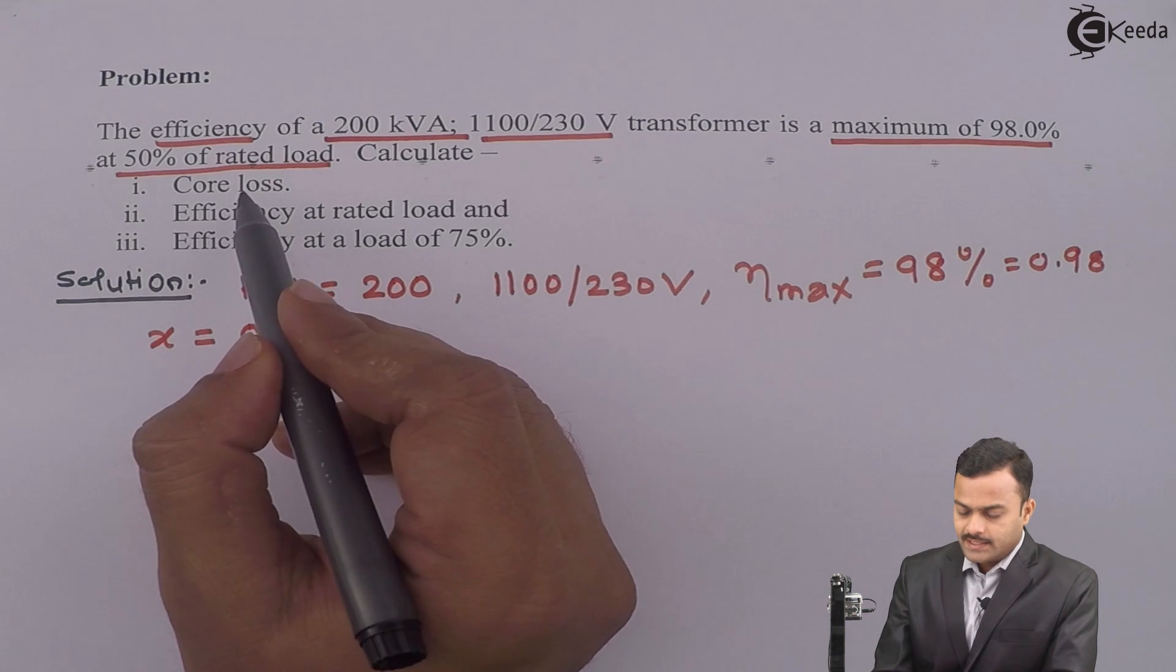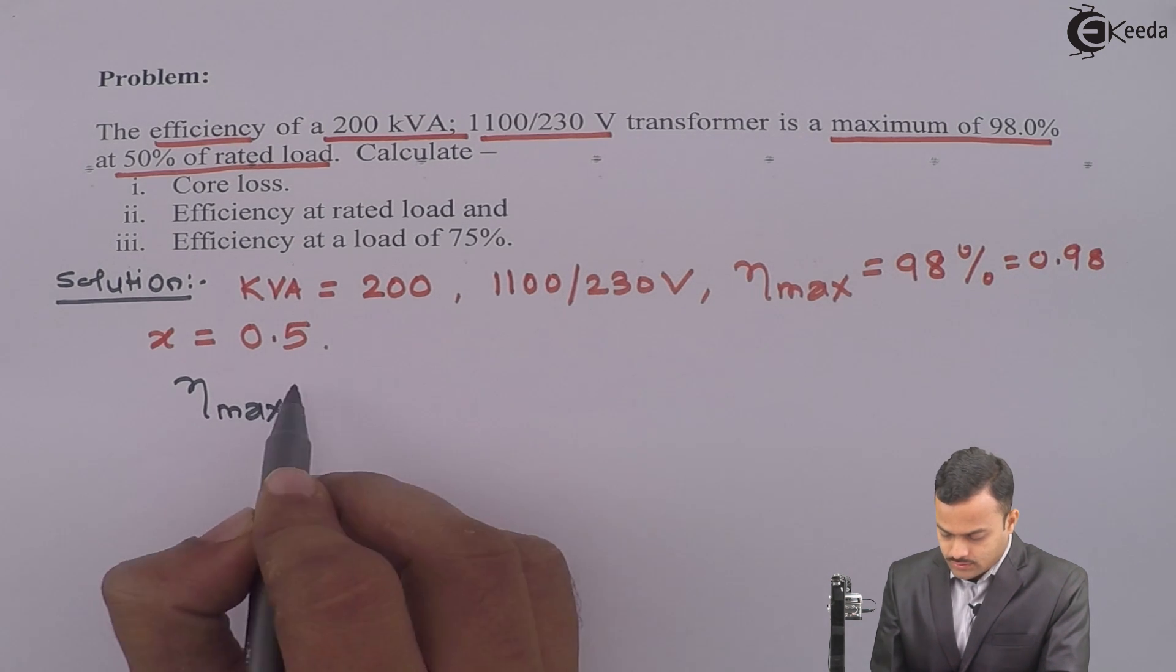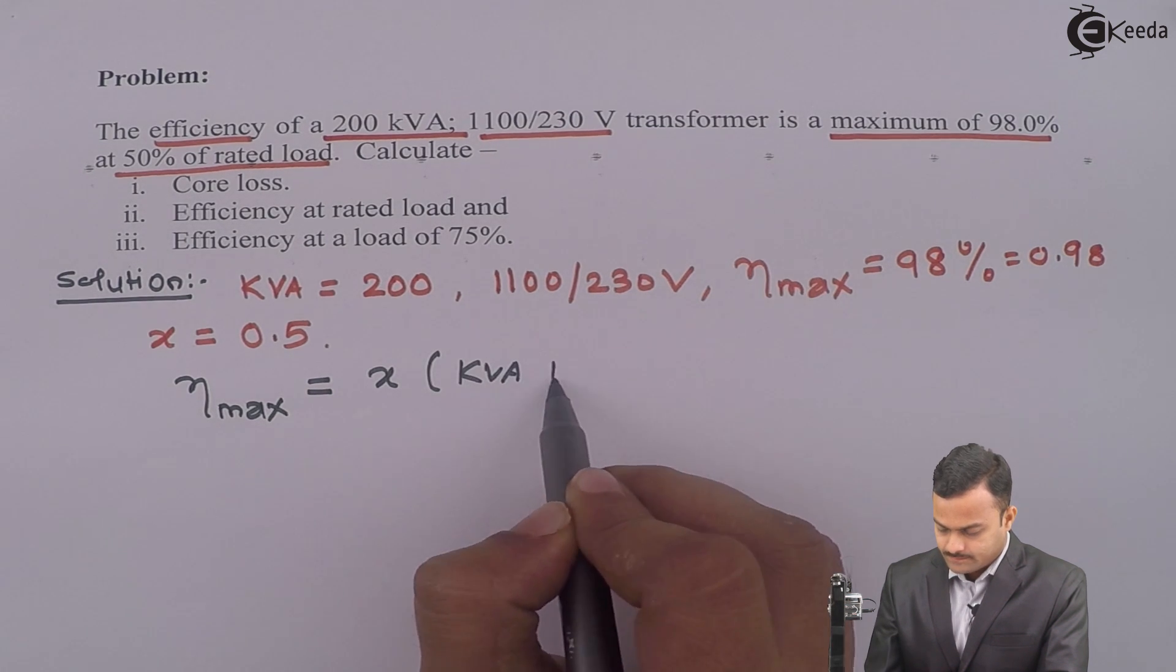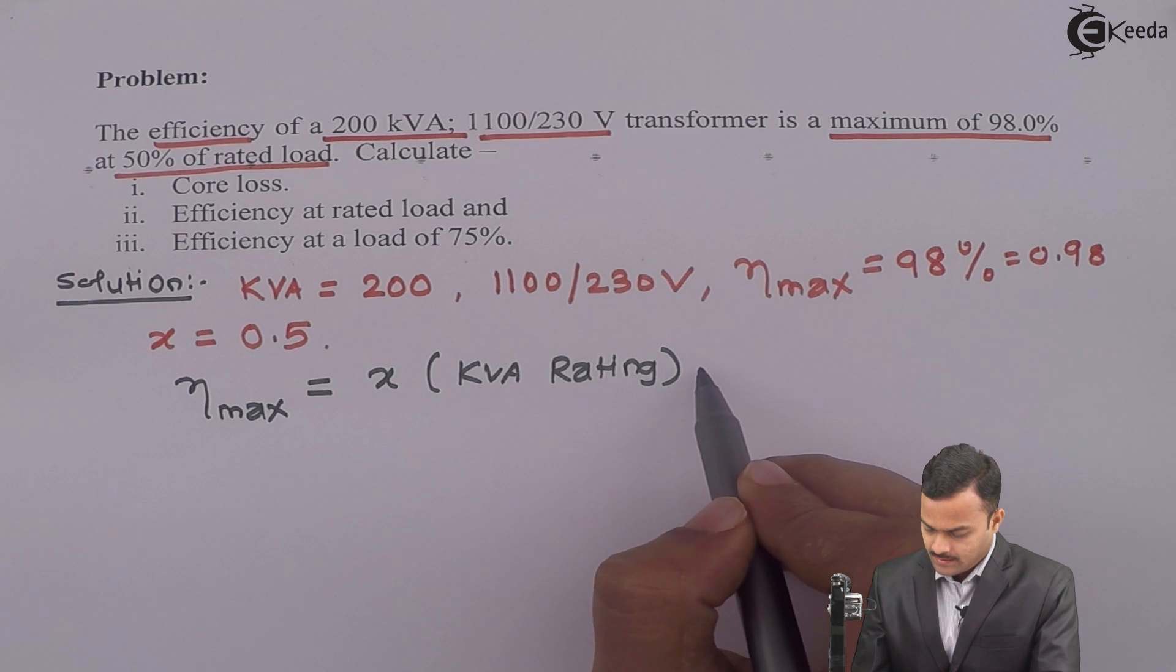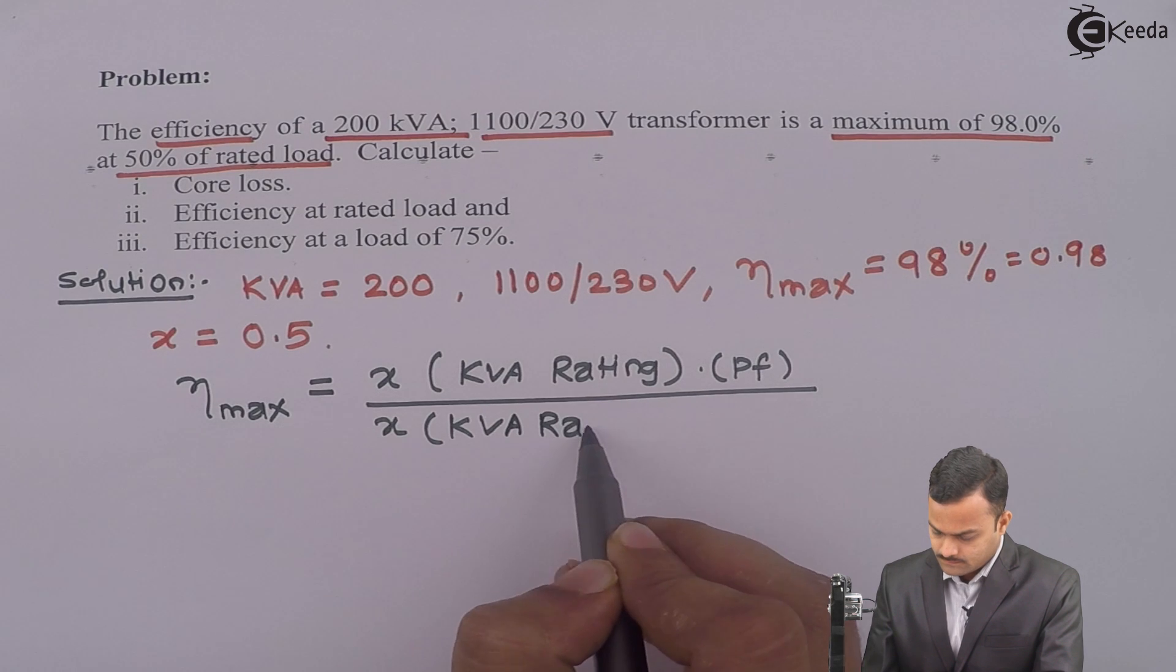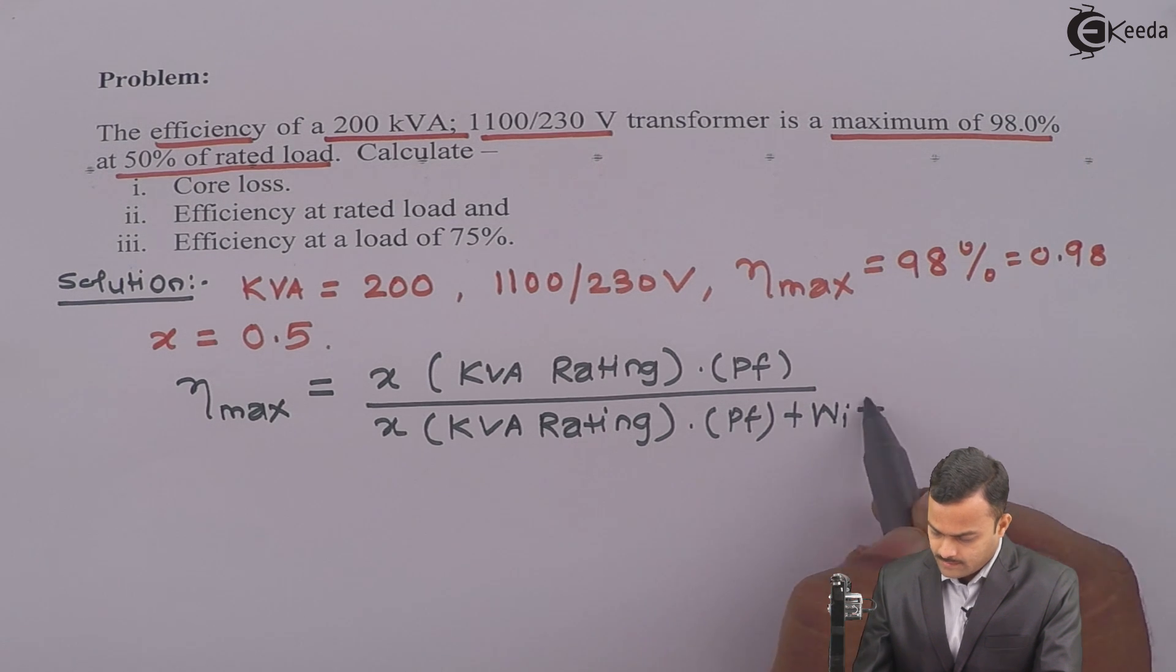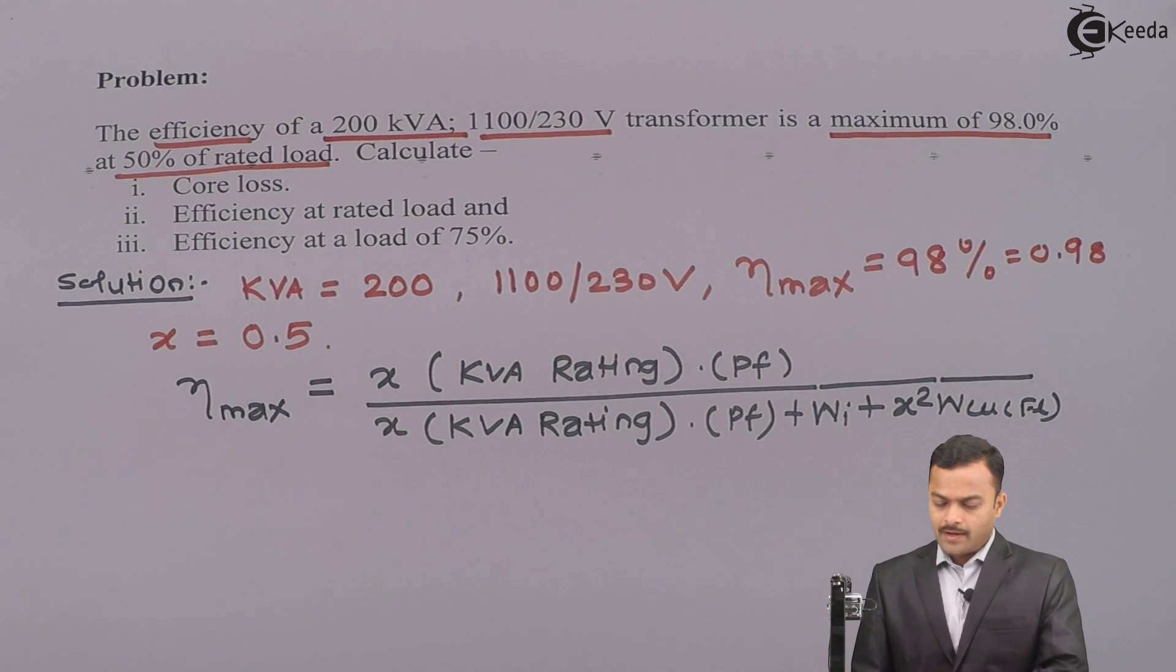Let us calculate the things that they have asked. So first I will write a formula for maximum efficiency. So maximum efficiency is X multiplied by kVA rating multiplied by power factor divided by X multiplied by kVA rating multiplied by power factor plus WI plus X square WCUFL. So here power factor is not given. So let us assume for this problem power factor is unity.